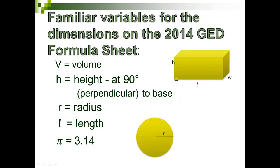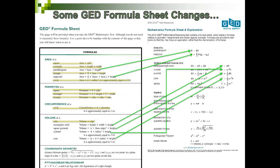In summary, we need to make sure we're teaching that capital B always represents the area of a base, and it is different from the lowercase b, which just talks about the length of the base. This is a very important distinction to delineate for our students.